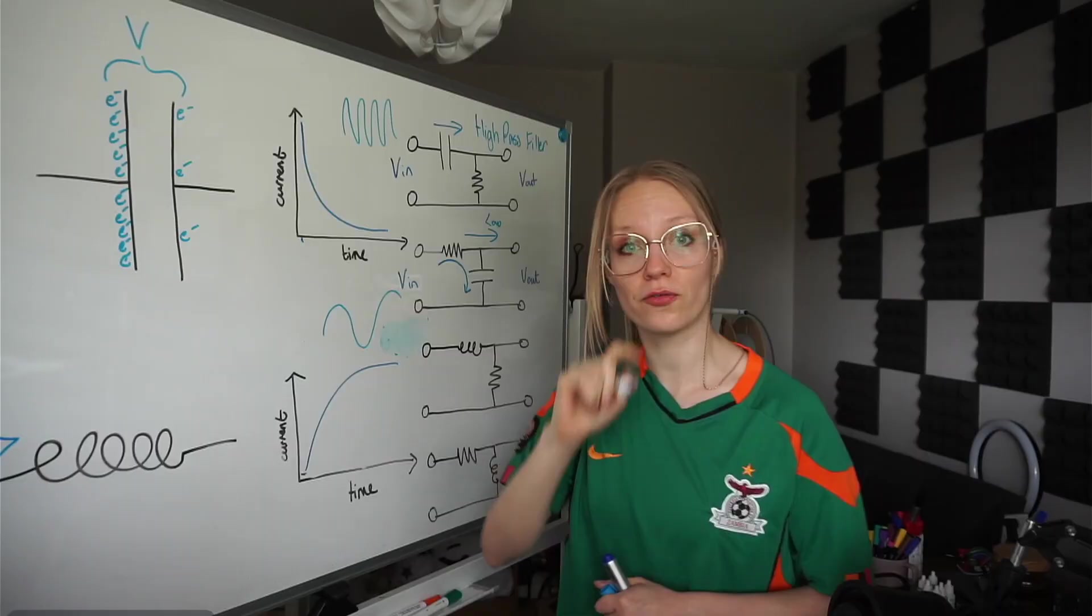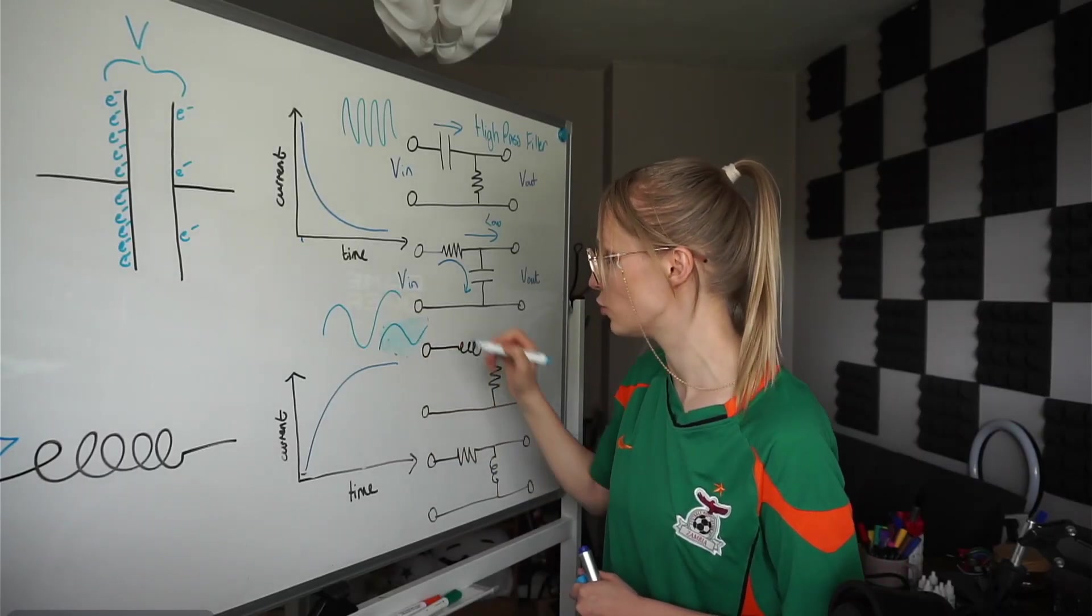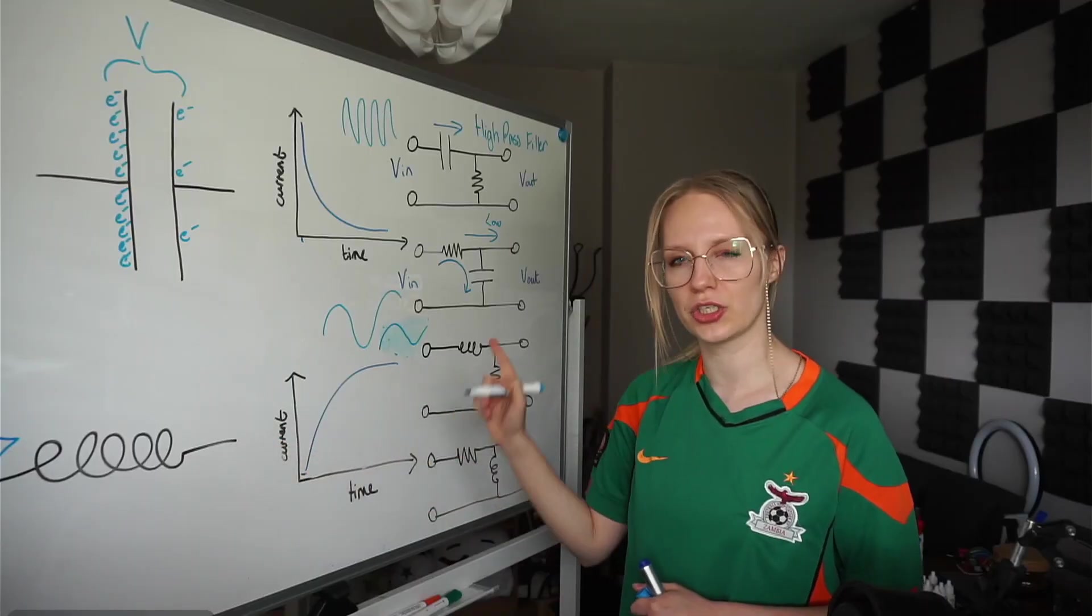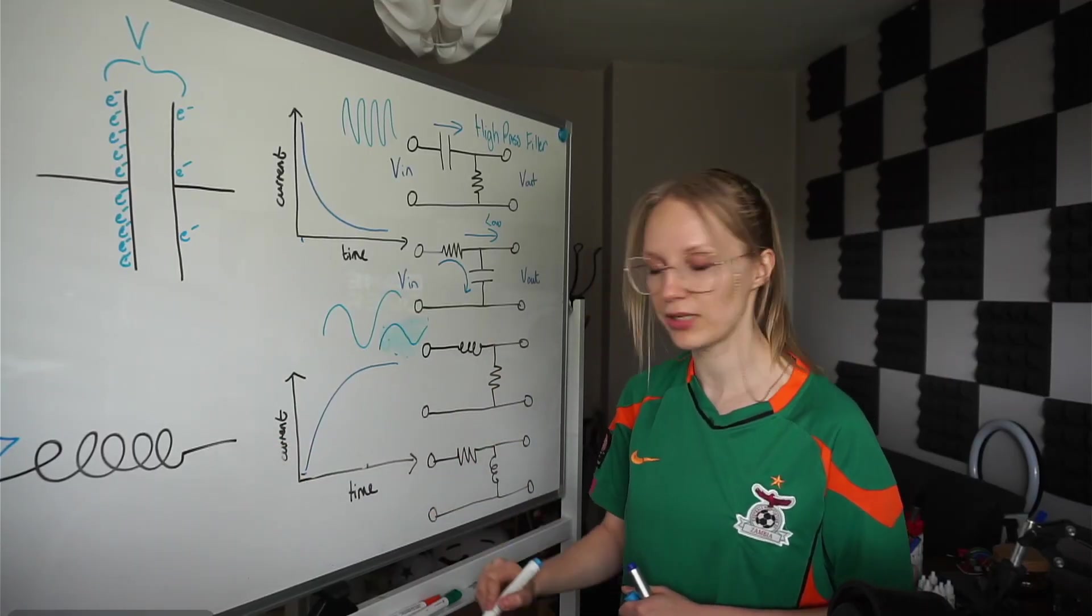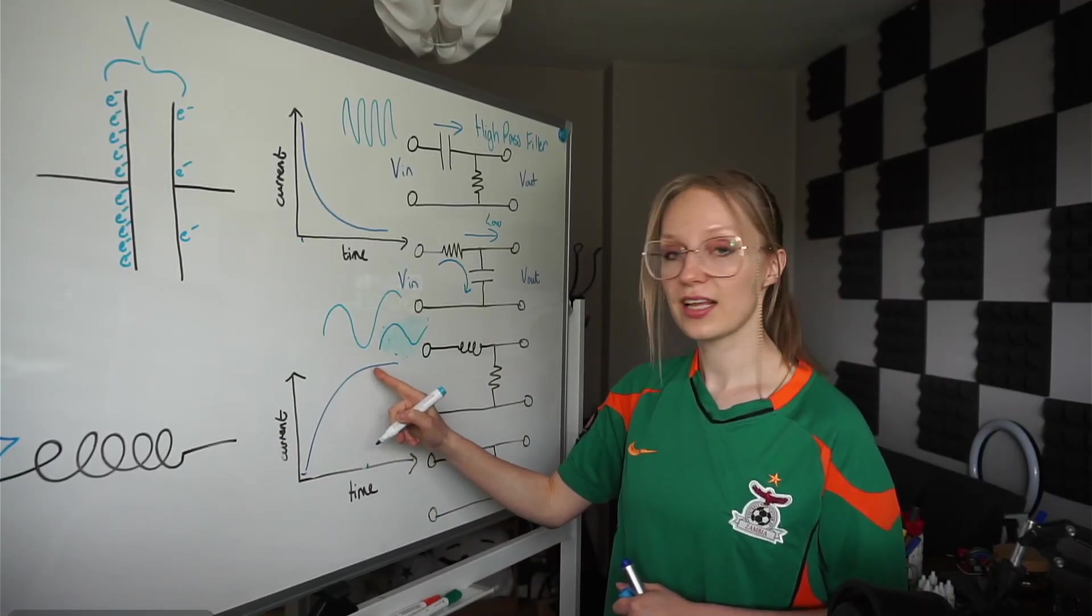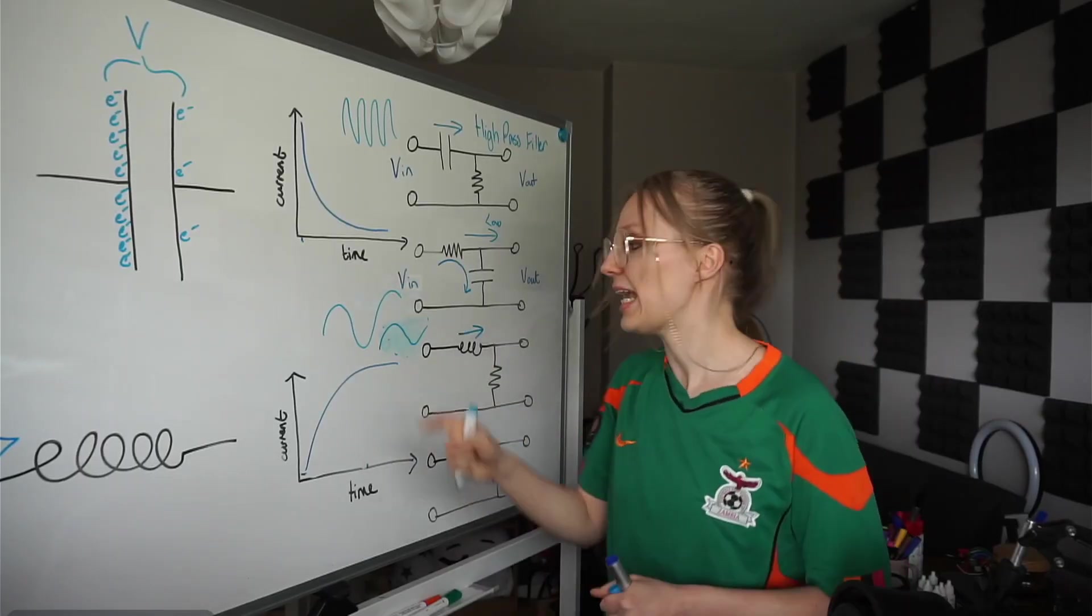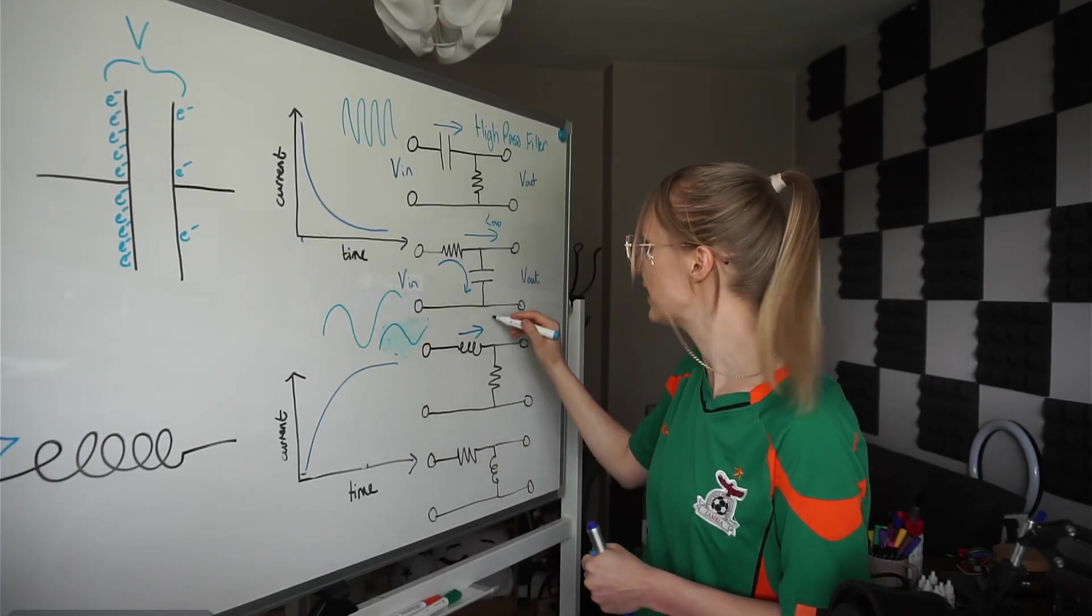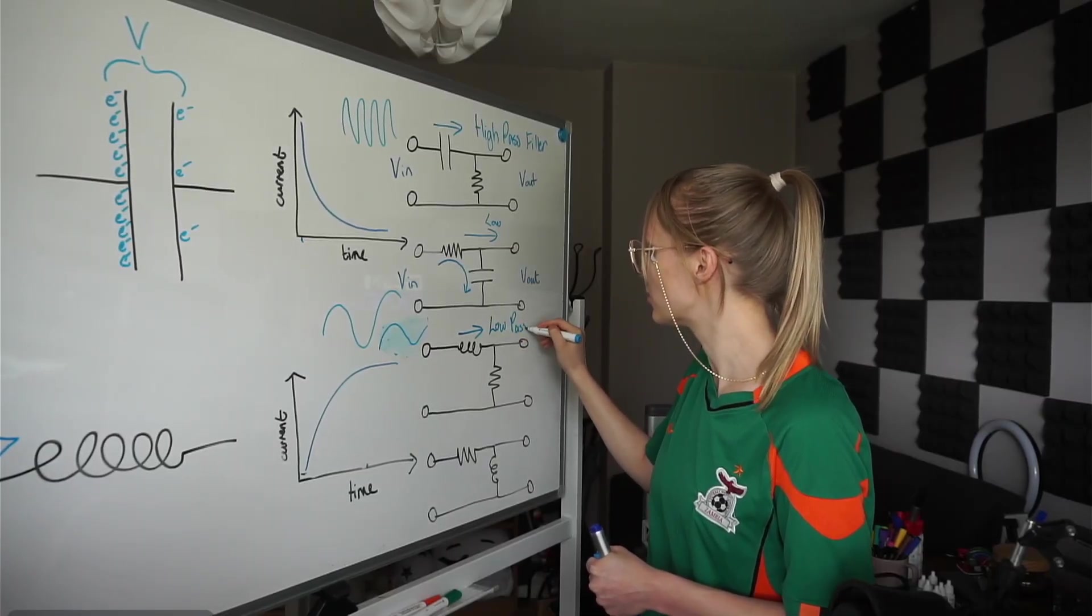Now, this time we have a low frequency wave coming in. That means we give a lot of time for the inductor to deal with this wave. So we have a really big T, which means that there's a lot of current going through. It allows low frequency through very easily. This is a low pass filter.